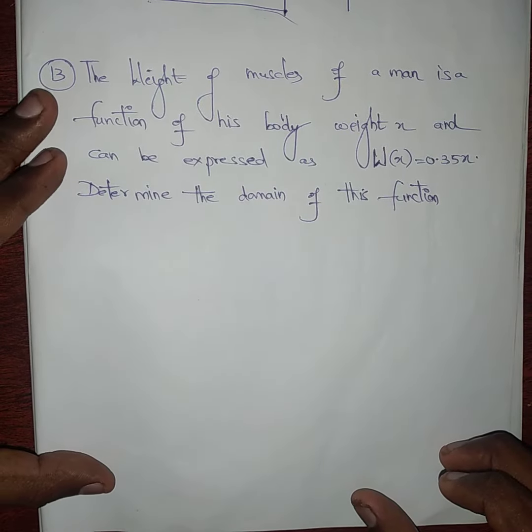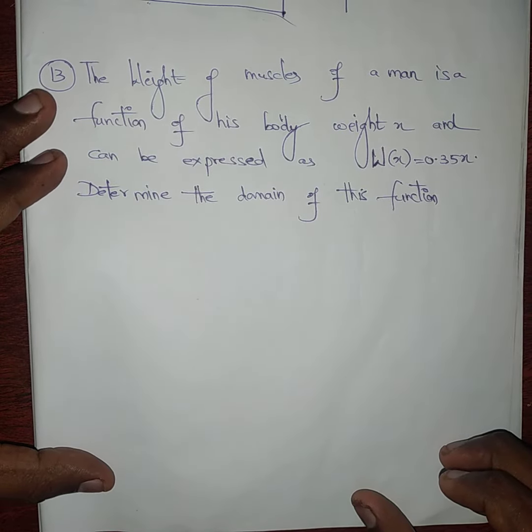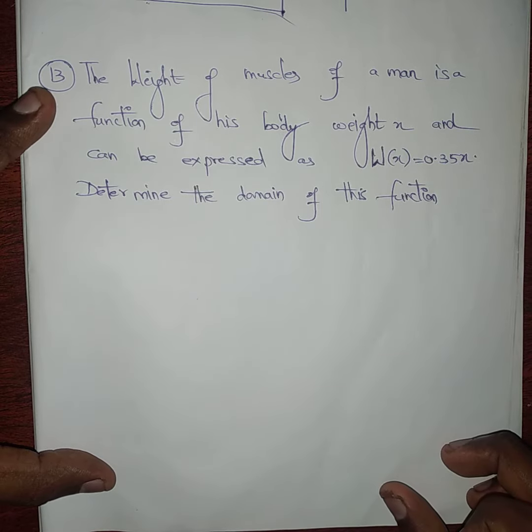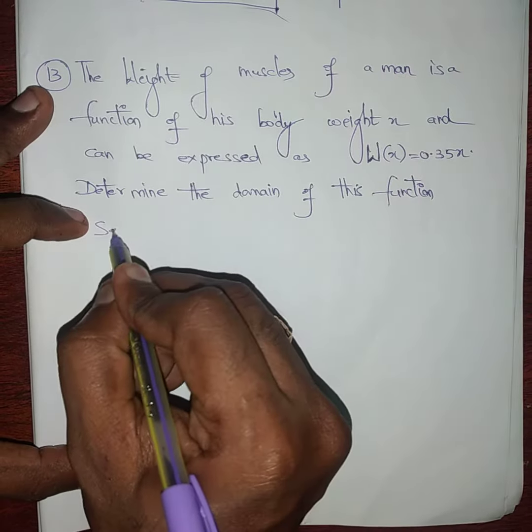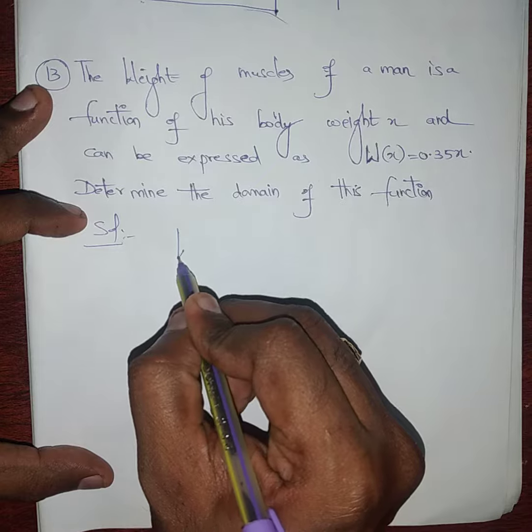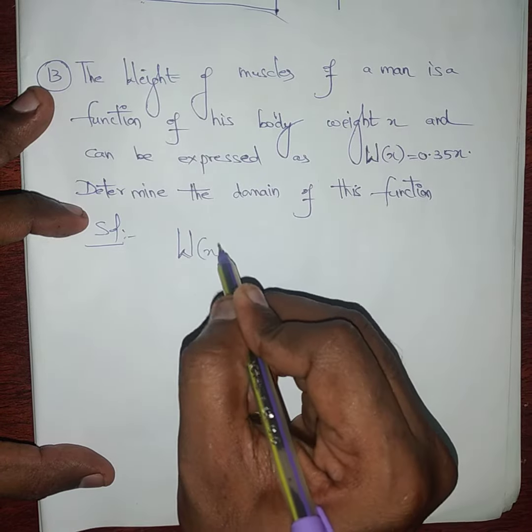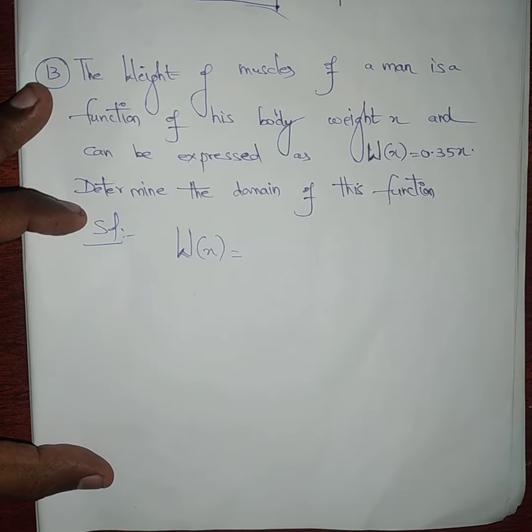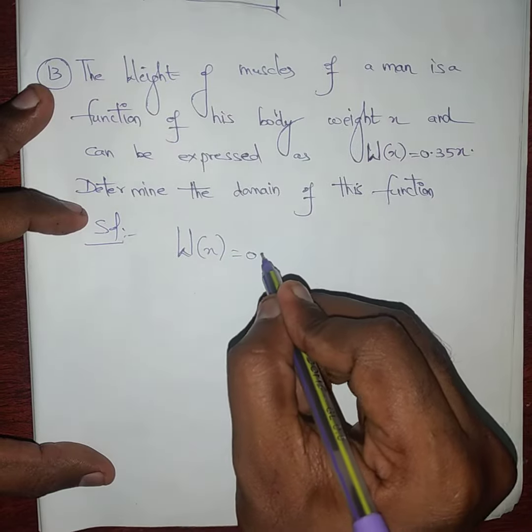Sum number 13. The weight of the muscles of a man is a function of his body weight x and can be expressed as W(x) = 0.35x. This W is mentioned as weight, where W(x) equals 0.35x.